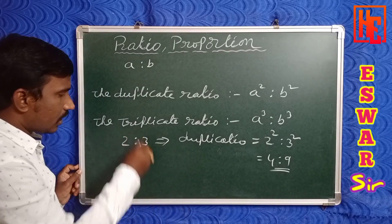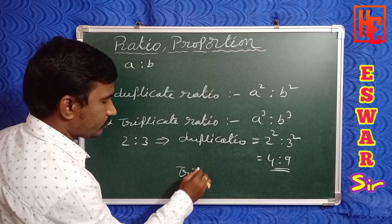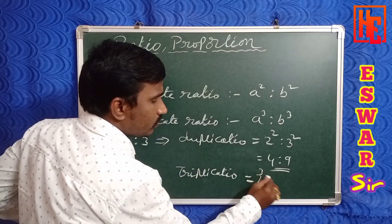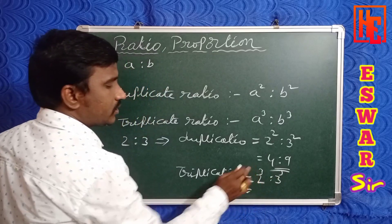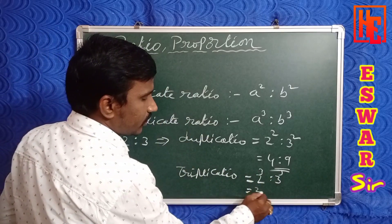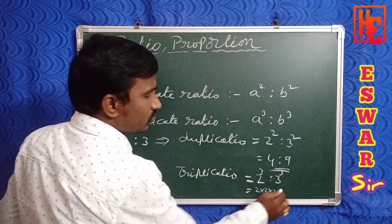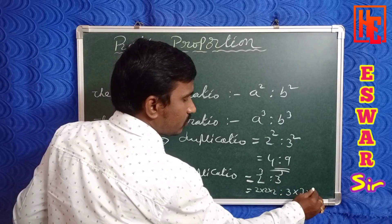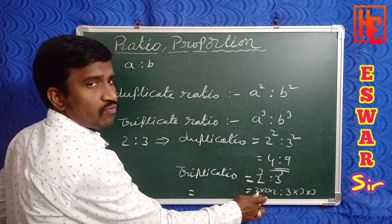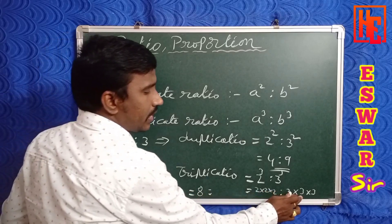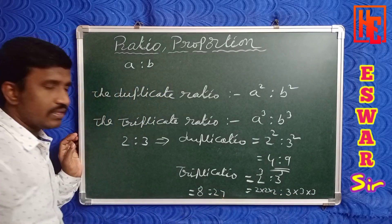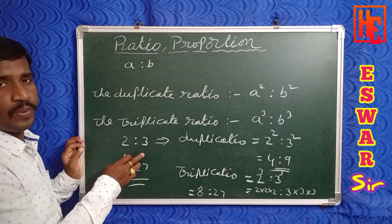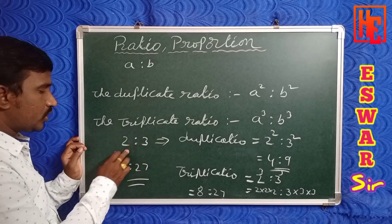Now find the triplicate ratio of 2 is to 3. Triplicate ratio means 2 cubed is to 3 cubed. 2 cubed means 2 × 2 × 2 = 8; 3 cubed means 3 × 3 × 3 = 27. So the triplicate ratio of 2 is to 3 means 8 is to 27.